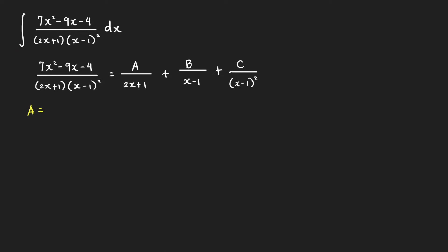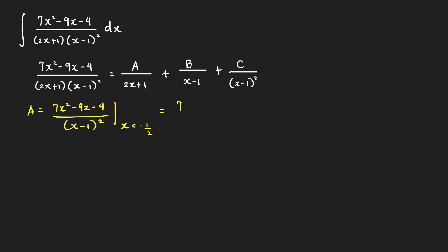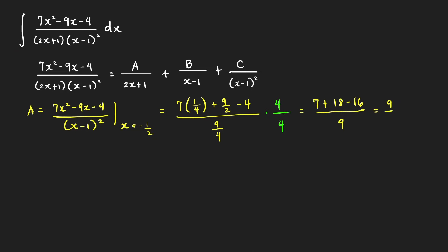To find a using cover-up, we evaluate 7x² minus 9x minus 4 over (x minus 1)² — covering the (2x plus 1) factor — and plug in x equals negative 1/2. We get 7 times (1/4) minus 9 times (negative 1/2) minus 4, all over (negative 3/2)², which is 9/4. Multiplying numerator and denominator by 4 gives (7 plus 18 minus 16) over 9, which equals 9 over 9, so a equals 1.